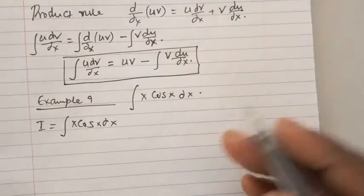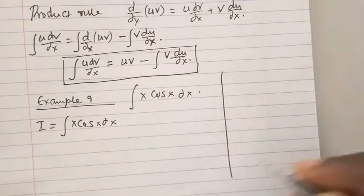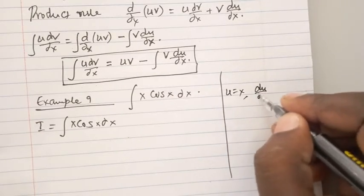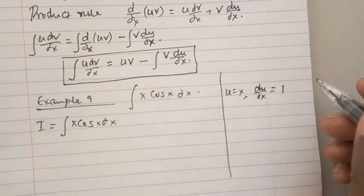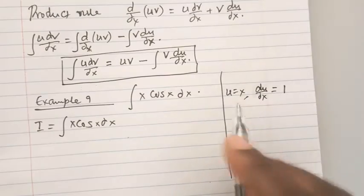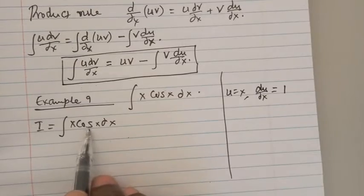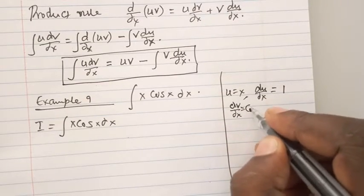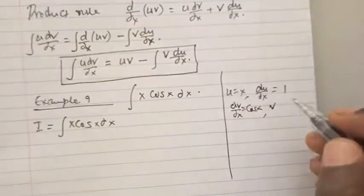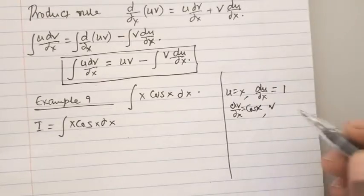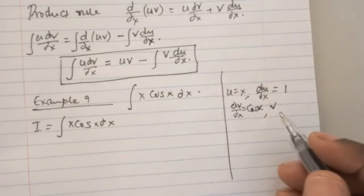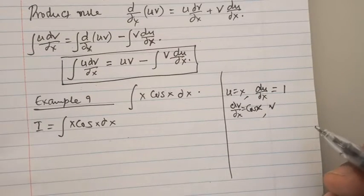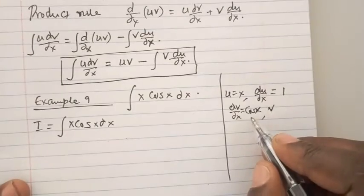Let me explain: what if we choose u to be x? That means du/dx equals 1. And if we choose u to be x, then cos x is dv/dx. To get v, we must integrate cos x, which gives us sin x.